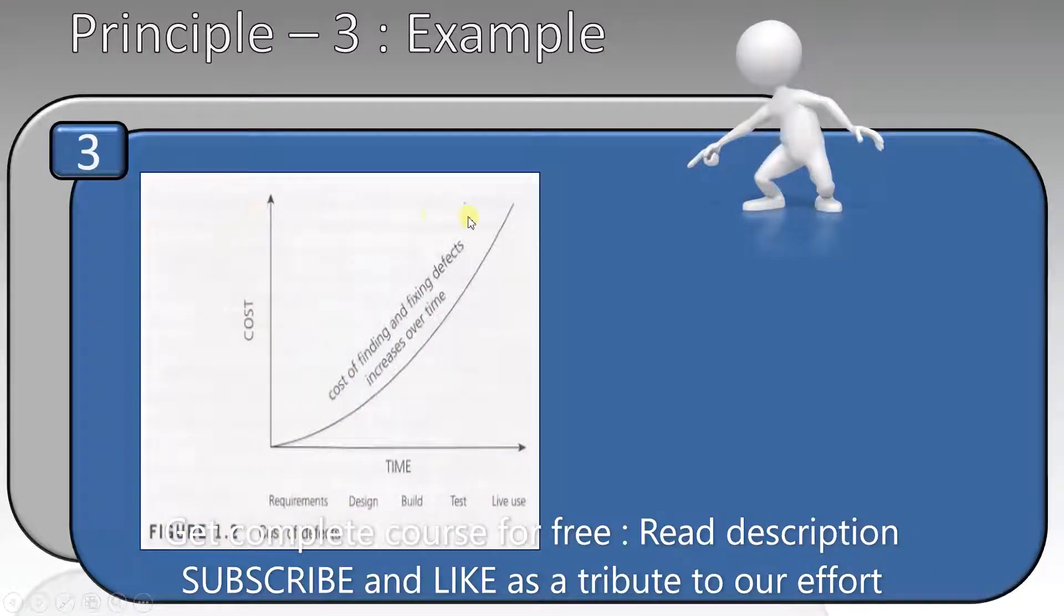So, here is a very popular graph about the cost and time of finding defects. As you can see, in the requirement stage, the cost of locating a defect is the lowest. When you move to the design stage, it becomes a little costlier. Then, as you move to the build stage and then to the test stage, it gets more and more expensive. Finally, at live use, it is the costliest to discover a defect in the product.